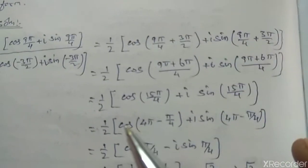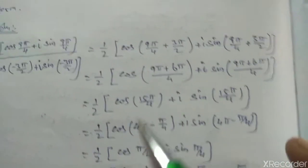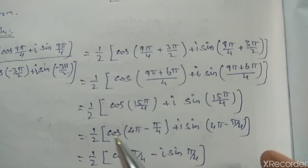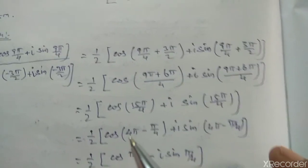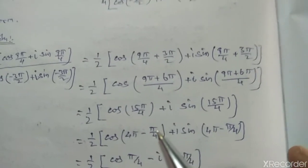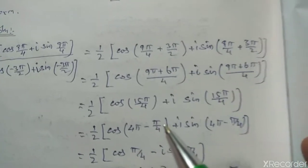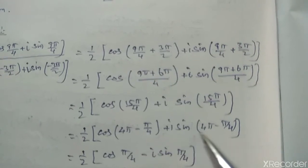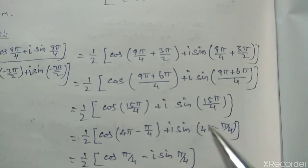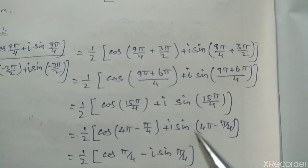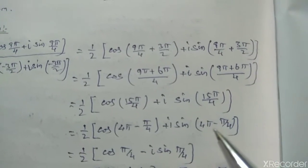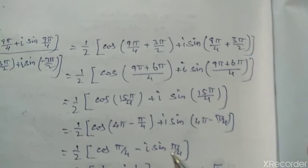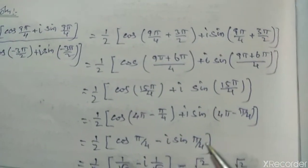Using the formula, cos(2π - θ) equals cos θ, so cos(4π - π/4) equals cos(π/4). And sin(2π - θ) equals -sin θ, so we get -i sin(π/4).